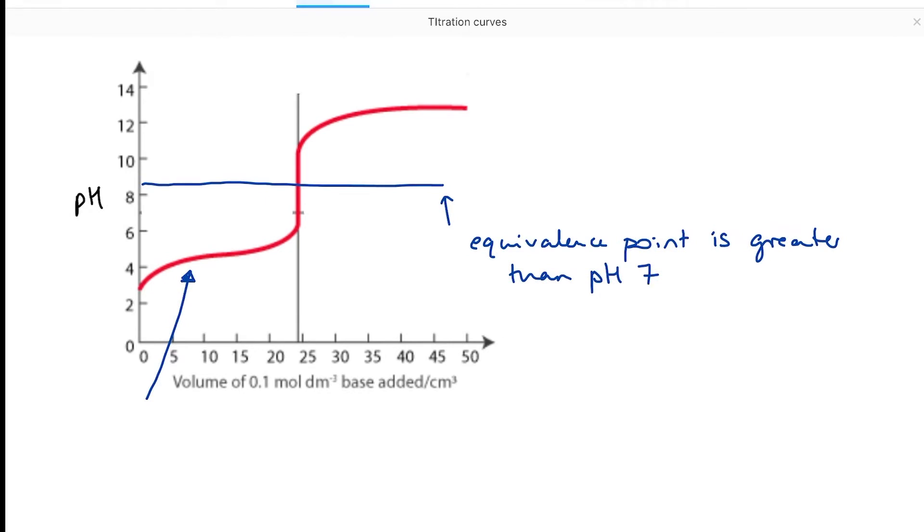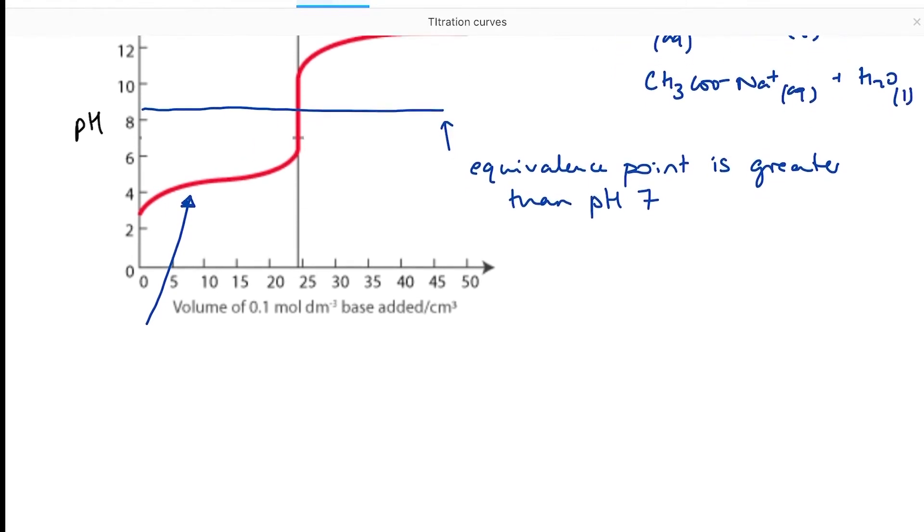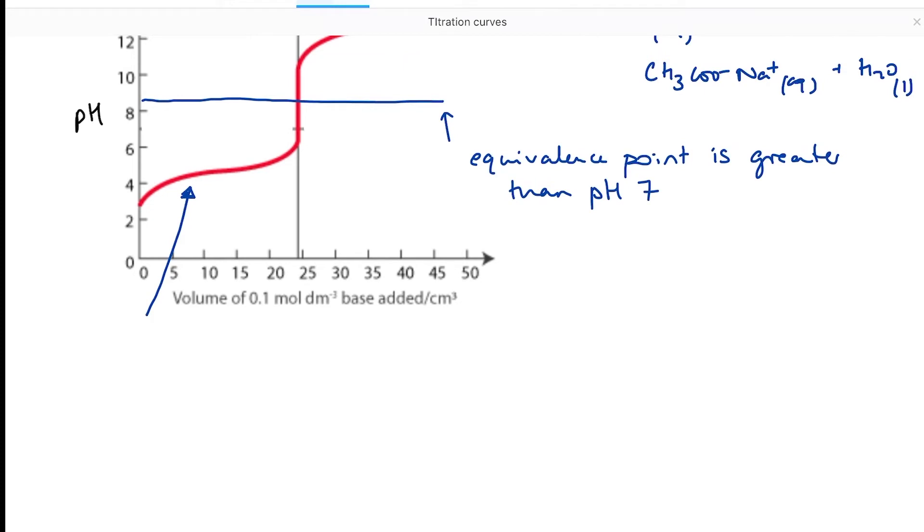So let's start by explaining the change in the shape of the curve at the beginning of the titration. So this is a weak acid-strong base. Perhaps we are titrating ethanoic acid against sodium hydroxide, in which case we would be making sodium ethanoate, CH3COO-Na+, and water. At the beginning of my titration, what I have in my conical flask, so at this point here before I've added any of my sodium hydroxide, is a weak solution of ethanoic acid.